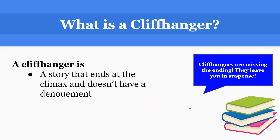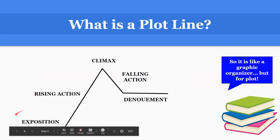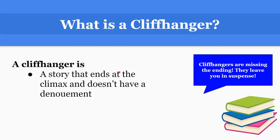One thing you need to know is that this mountain may look a little different. It may go through the exposition and rising action and end at the climax. This is called a cliffhanger. A cliffhanger is a story that ends at the climax and doesn't have a denouement. Cliffhangers are missing the ending, so they leave you in suspense — that's why they're called cliffhangers.